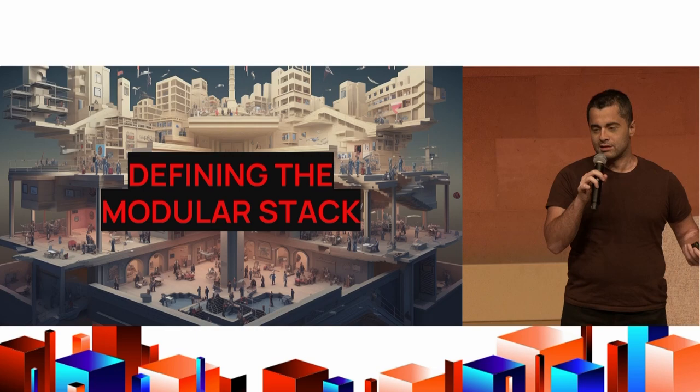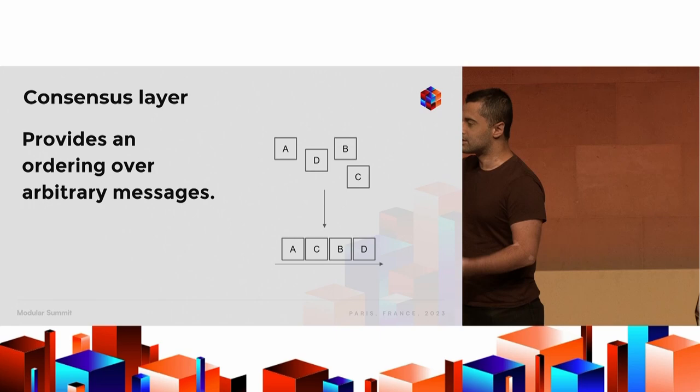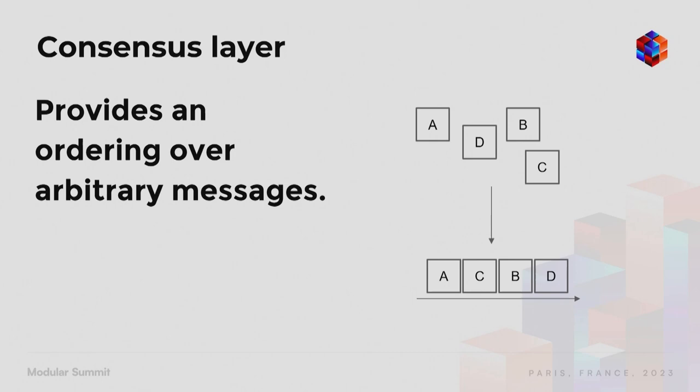So what are the layers in a modular stack? The first layer is consensus — that's the layer at the bottom. Consensus provides an ordering over arbitrary messages. Developers input messages or transactions into the system and the consensus layer simply decides what the order of those messages is.